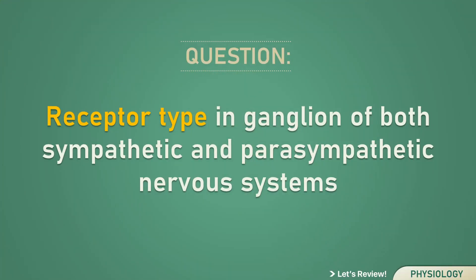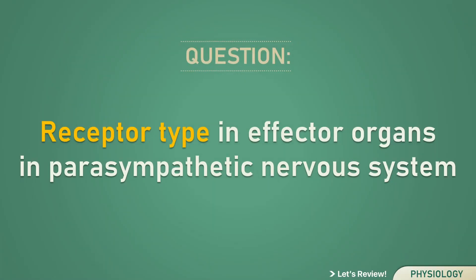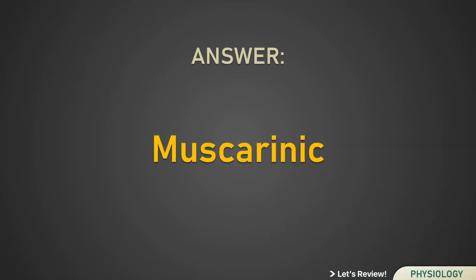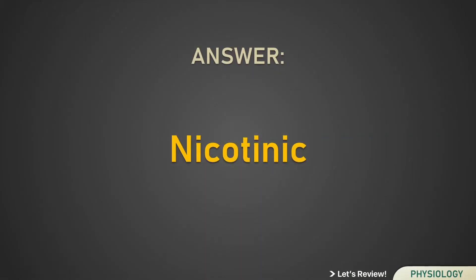Receptor type in the ganglion of both sympathetic and parasympathetic nervous systems: Nicotinic. Receptor type in effector organs in the parasympathetic nervous system: Muscarinic. Receptor type in muscles in the somatic nervous system: Nicotinic.